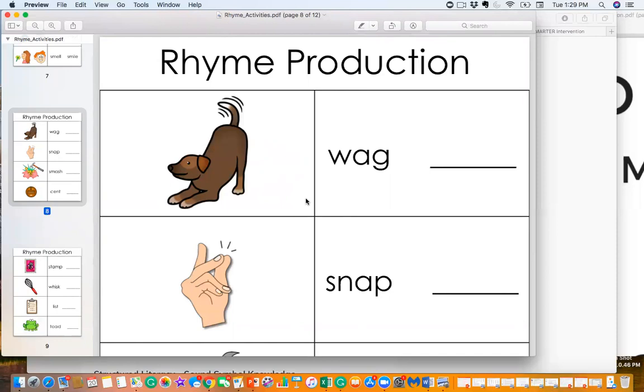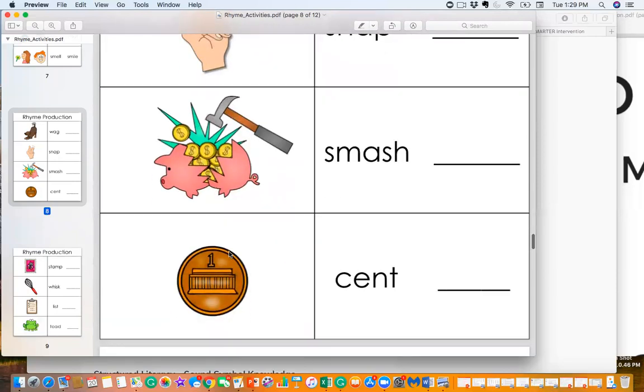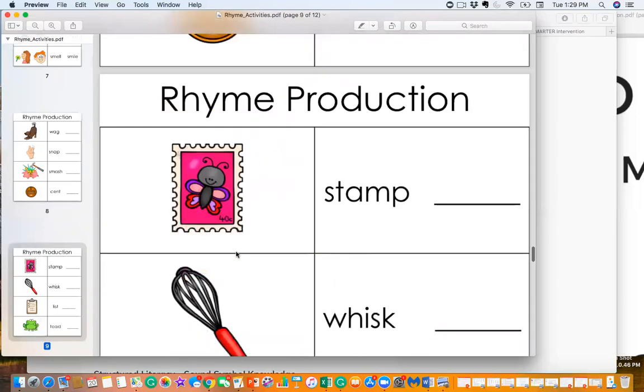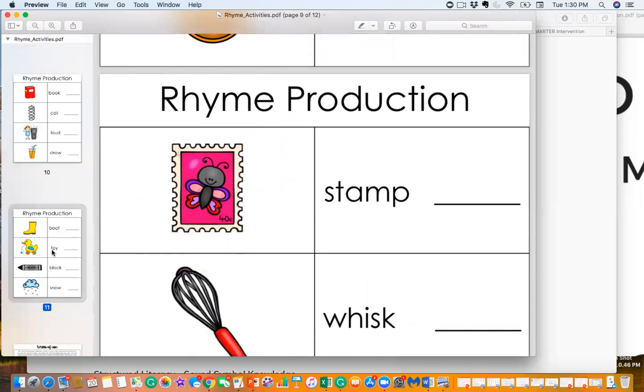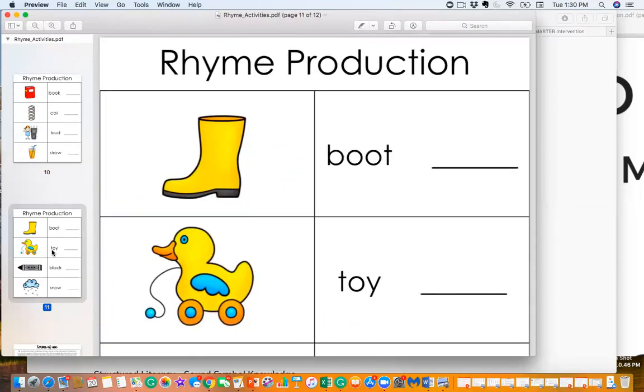If they're skilled with rhyme discrimination, then you're going to move on to rhyme production. So this is where you show them the card. The word is wag. Can your student produce a word that rhymes with wag, lag, bag, sag? We've got all of these cute pictures, smash, scent, and pages here where you can go through and help develop that strategy to produce rhymes.